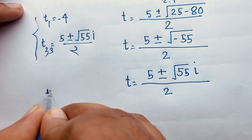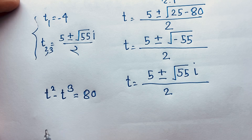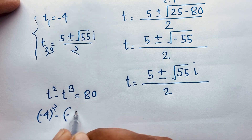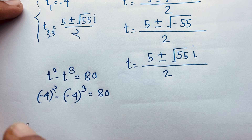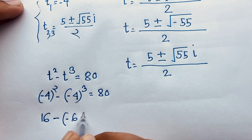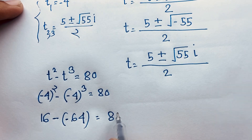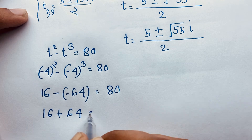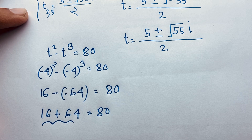Let's verify our question: t to the power 2 minus t to the power 3 is equal to 80. We found t is equal to negative 4, so negative 4 squared minus negative 4 to the power 3 is equal to 80. This is 16, since the power is even it is always positive, minus negative 64, since the power is odd it is negative. So 16 minus minus 64 is 16 plus 64, which is equal to 80. Left hand side equals right hand side. Both sides are equal.